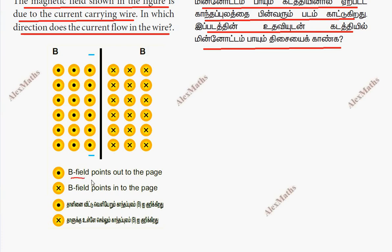The magnetic field points out of the page. So now we have a straight conductor — a black line. We have a concept: for a straight current-carrying conductor, the magnetic field lines are concentric circles.